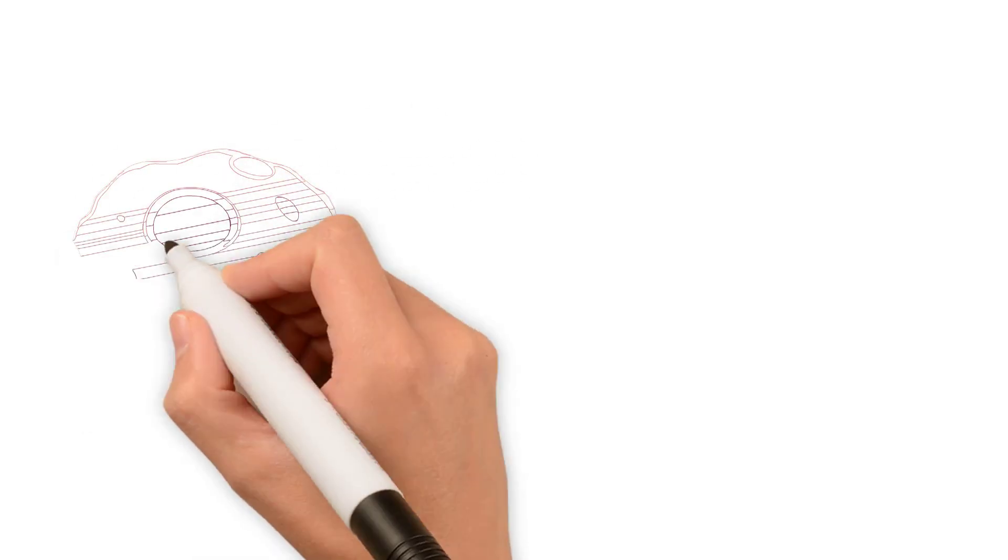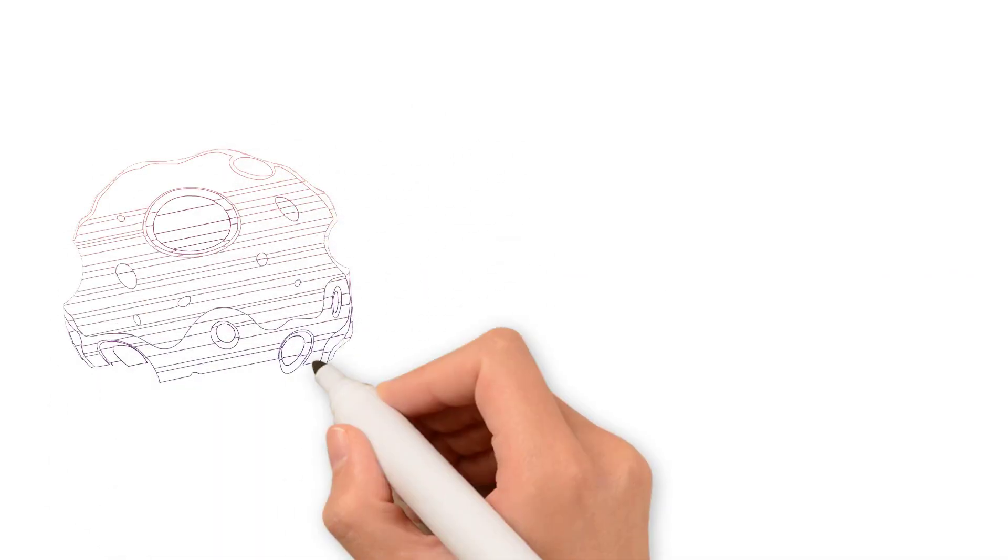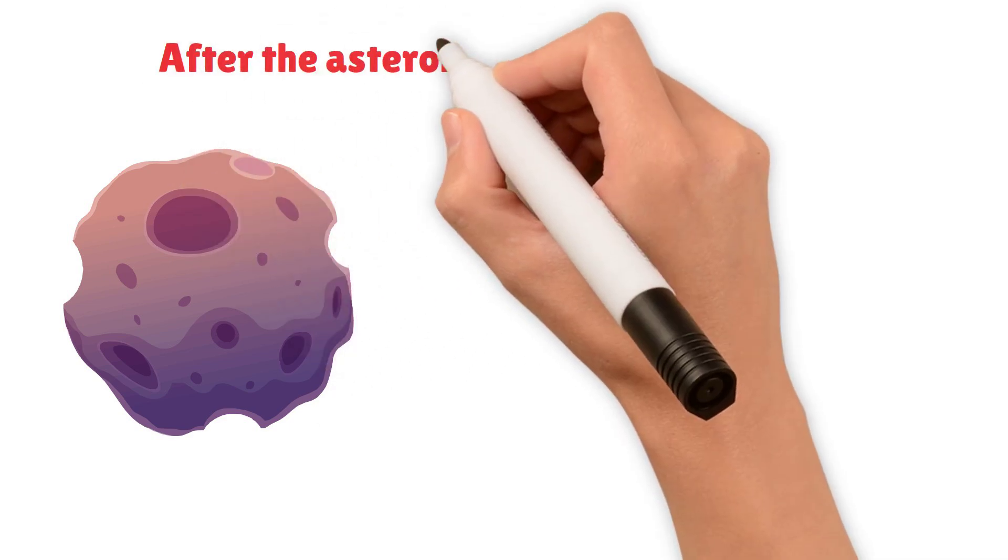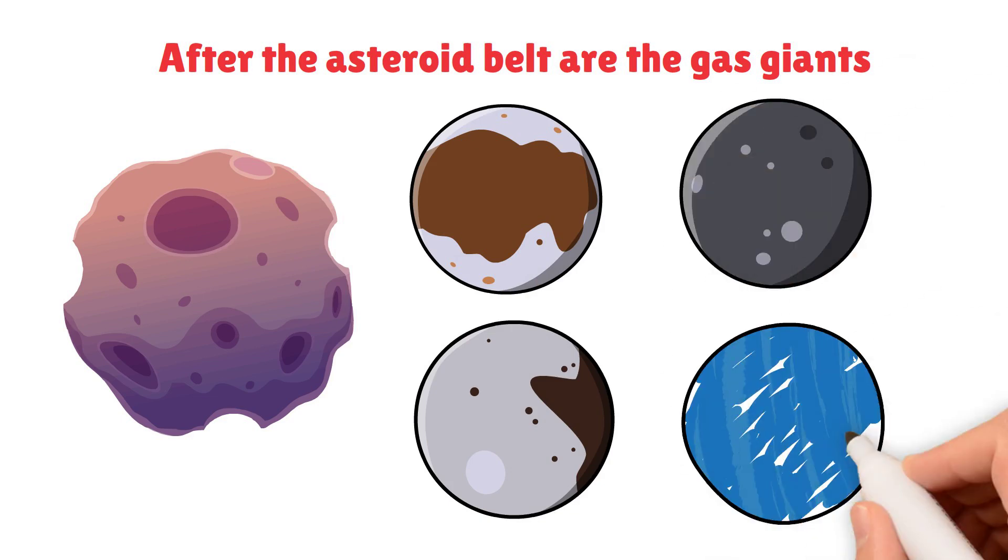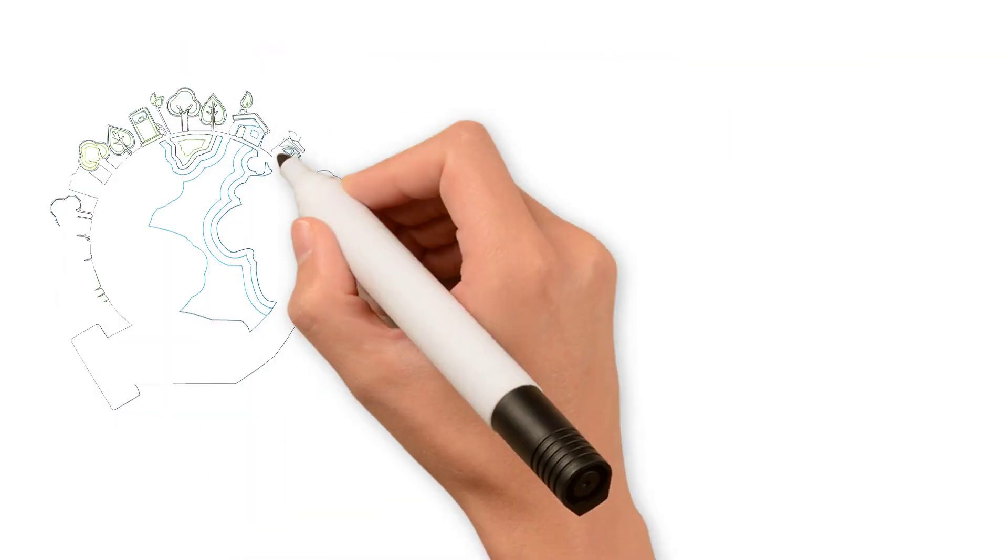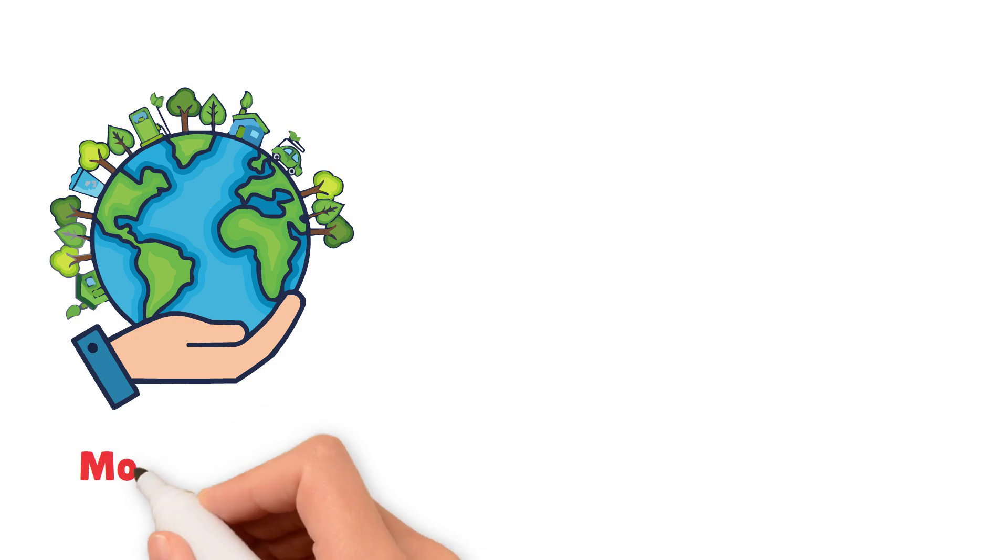Beyond Mars is the asteroid belt, a region of space filled with rocks and debris. After the asteroid belt are the gas giants, Jupiter, Saturn, Uranus, and Neptune. These planets are much larger than Earth and are made mostly of gas.